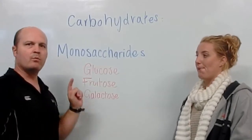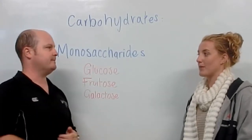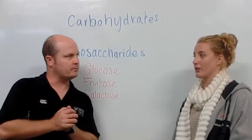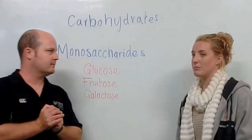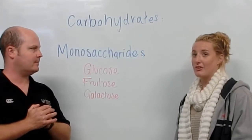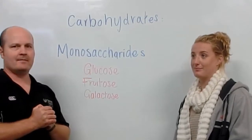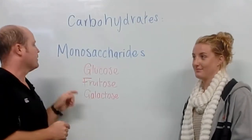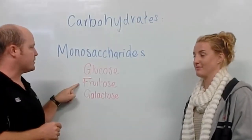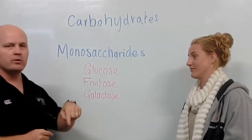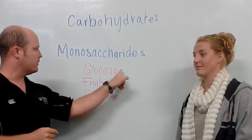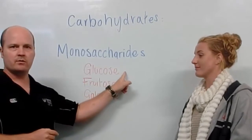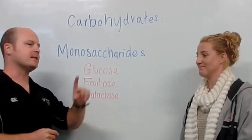Our next monosaccharide is fructose. And where do we find that? Fruit sugars, which produce glucose in the liver. So fructose is turned into glucose so it can be used, and the liver does that.